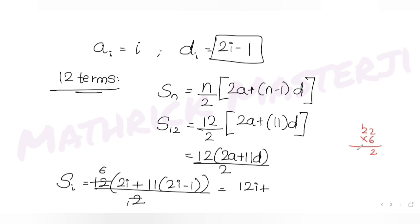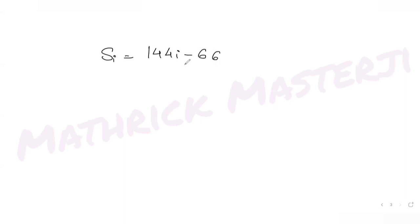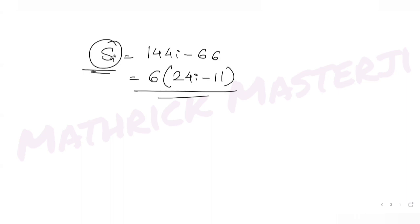Expanding inside: 6 × (2i + 22i − 11) = 6(24i − 11). So S_i = 6(24i − 11). This gives us the sum of 12 terms for any i-th arithmetic progression out of the 10 we have.